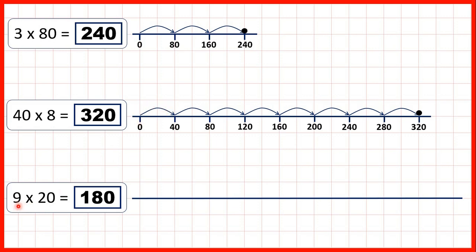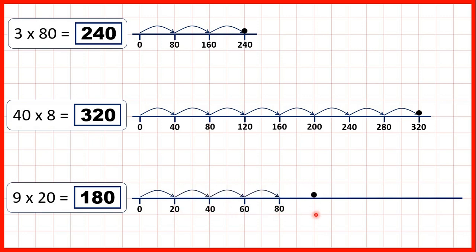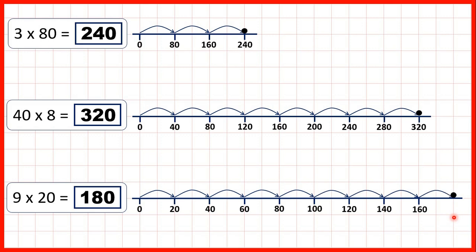And finally, we had 9 times 20. So if we count in steps of 20, we get 20, 40, 60, 80, 100, 120, 140, 160, 180.